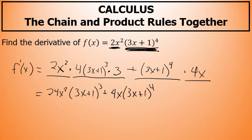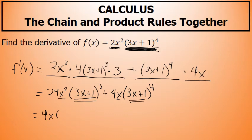Now between these two terms I can identify some common factors. Between 24 and 4 there's a common factor of 4. Between x squared and x there's a common factor of x. And these quantities are also a common factor — here's the quantity to the third power, and that same 3x plus 1 quantity to the fourth power. I can factor 3x plus 1 to the third power out to the front, since the lower power between the two identical quantities is a 3.